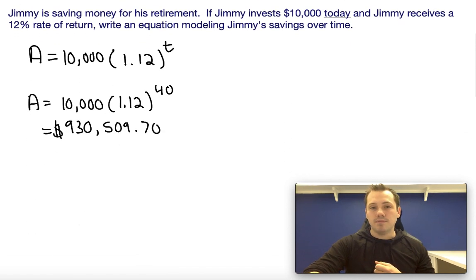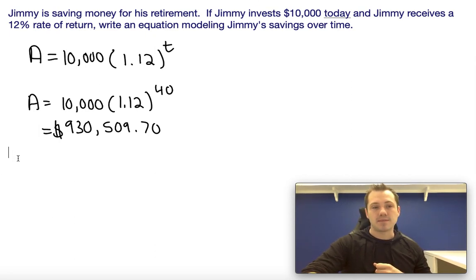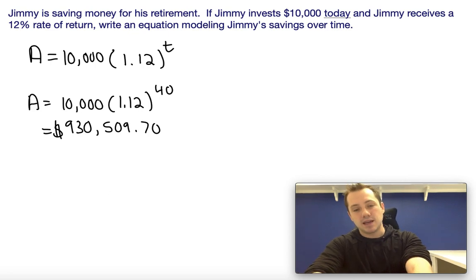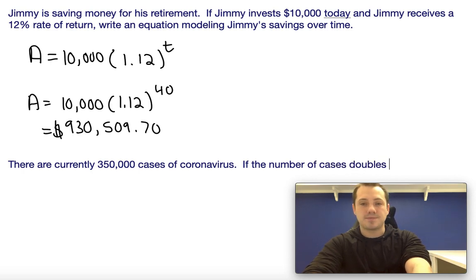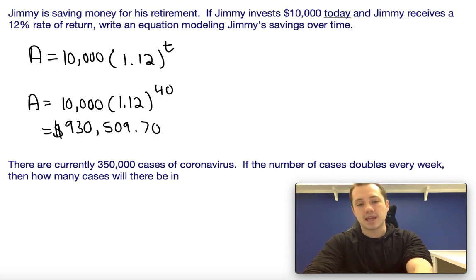Another example might be something related to the spread of a pandemic. Let's say there are currently—and this is pretty much accurate, I'm doing this on March 22nd, 2020—about 350,000 cases of coronavirus. If the number of cases doubles every week, and it seems to be right now that it's maybe doubling every four or five days, let's just go with every week, then how many cases will there be in 10 weeks?